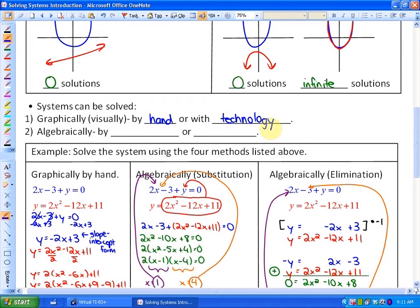Secondly, we could solve systems algebraically. There's two methods to do that. One is called the substitution method, and we'll look at that method using a particular example. And the other is called the elimination method.